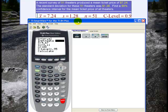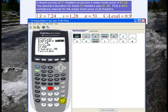So enter. I'm given statistics, so stats is correct. Down arrow. X-bar is 7.24. Enter. S is 1.28. Enter. N is 51. Enter. And C-level is 0.9. Enter.